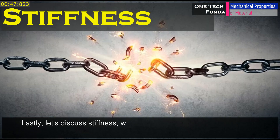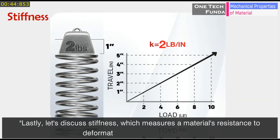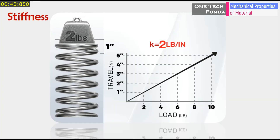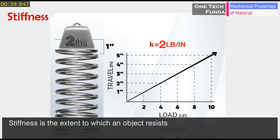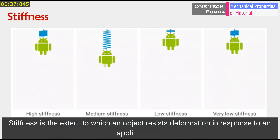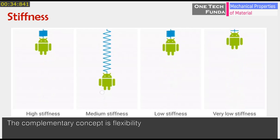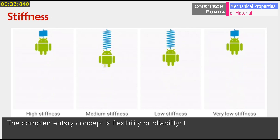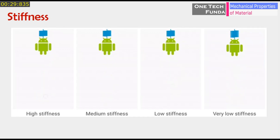Let's discuss stiffness, which measures a material's resistance to deformation under applied loads. Stiffness is the extent to which an object resists deformation in response to an applied force. The complementary concept is flexibility or pliability — the more flexible an object is, the less stiff it is.